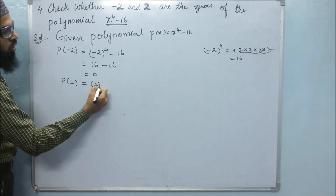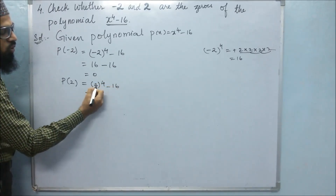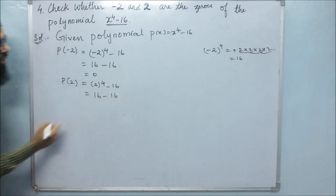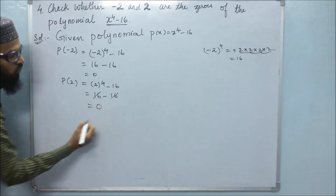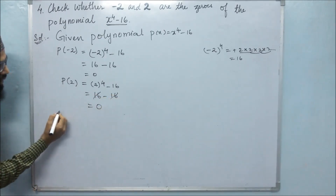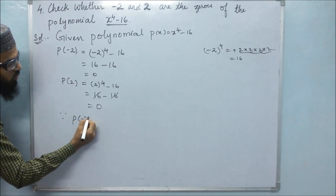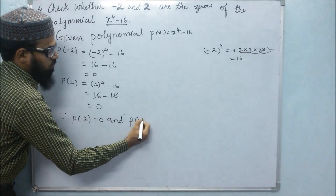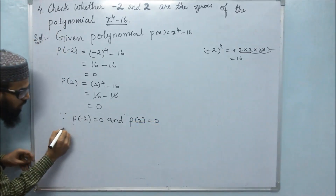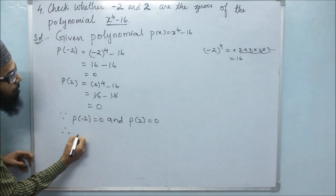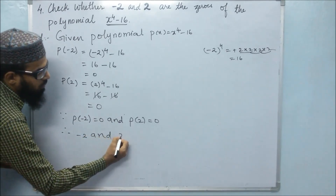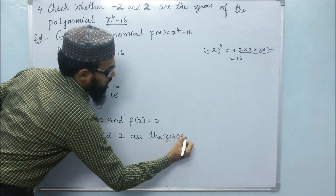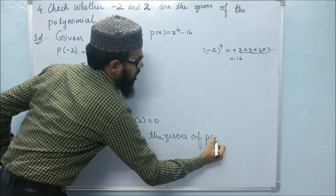Now for P of 2, we get 2 to the power of 4 minus 16. Again, 2 to the power of 4 is 16, so 16 minus 16 is 0. Since P of minus 2 equals 0 and P of plus 2 is also 0, therefore minus 2 and plus 2 are the zeros of P of x.